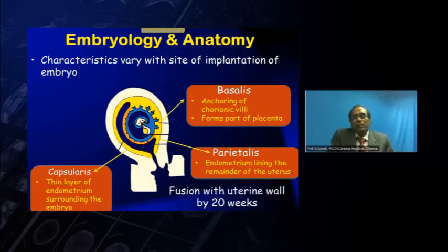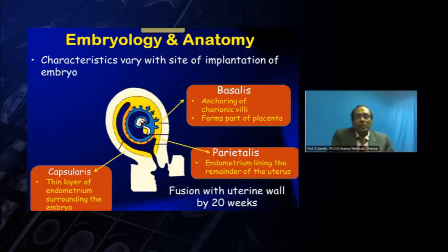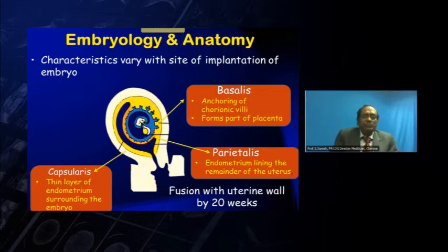As the pregnancy grows, you will find that fusion with the uterine wall occurs completely by about 20 weeks. So at around 11–12 weeks you will see that the amnion is separate and the chorion is separate. By about 20 weeks, all of this fuses and a complete fusion with the uterine wall occurs.